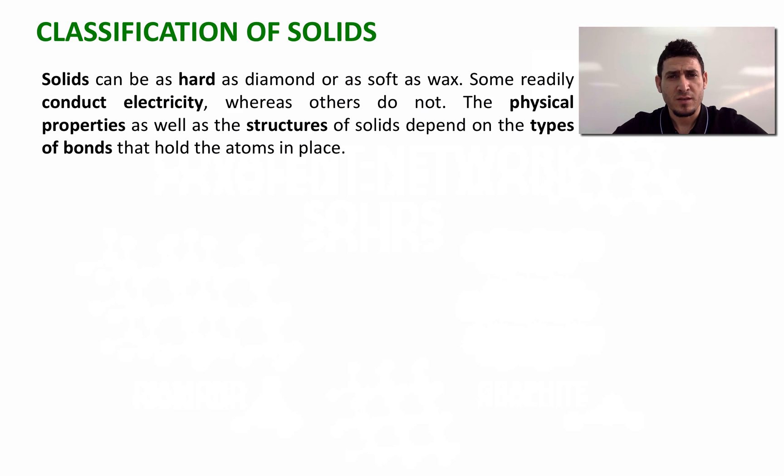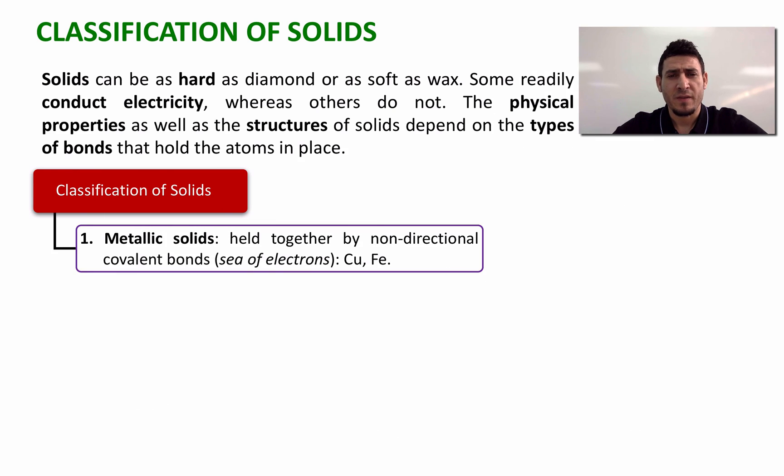Based on this, we can list four different types of solids. The first one is metallic solids, where the atoms are held together by non-directional covalent bonds, or what we call a sea of electrons. Examples include copper, iron, and many other metals from the periodic table.